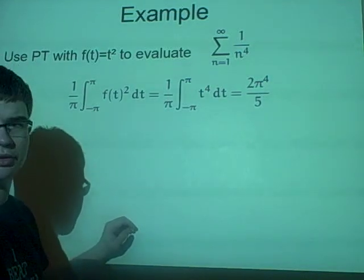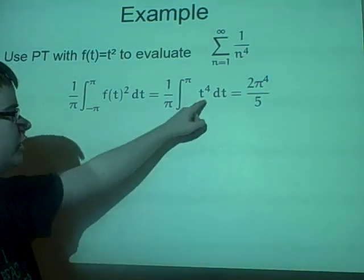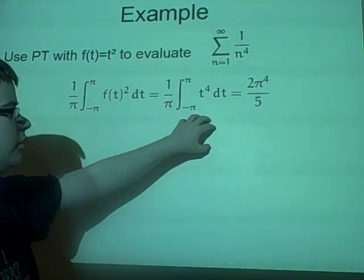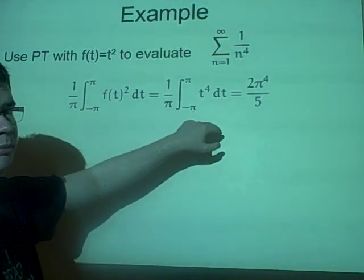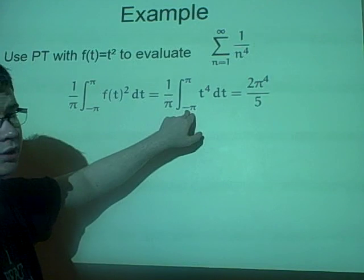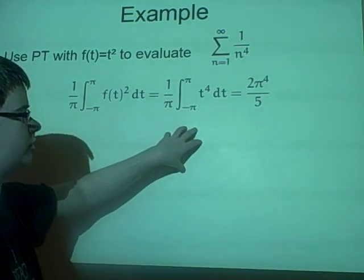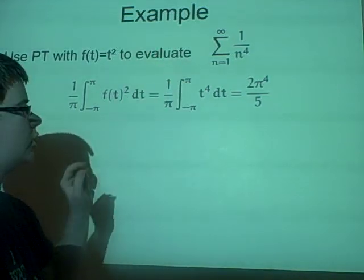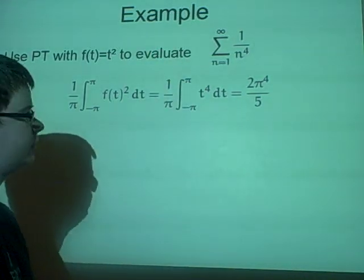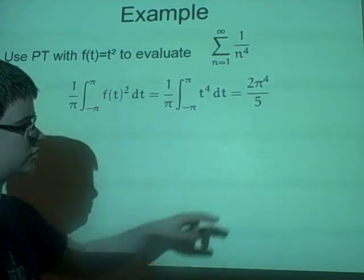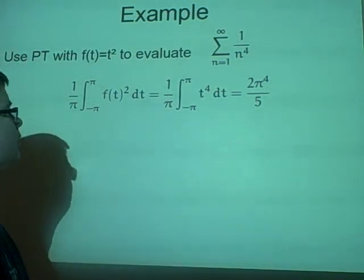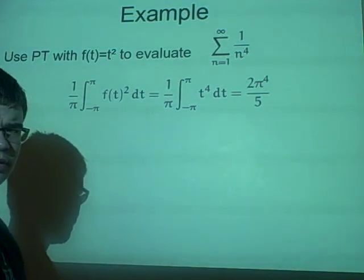You're probably wondering where the 5 came from, but that's because it goes up to a 5, and then we have a minus minus π, and that will change to 2π⁵ over 5, and we've got the 1 over π here, so that's correct. Next thing we want to do, we want to find a₀, bₙ and aₙ.